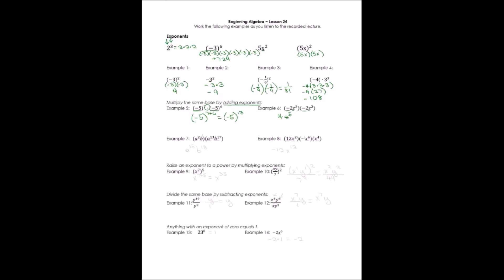In example 7, there are no coefficients to multiply, so we focus on the variables. For the a terms: a squared times a to the 13th — add the exponents to get a to the 15th. For the b terms: b with no exponent has an understood exponent of 1, so 1 plus 17 gives b to the 18th. In example 8, we do have coefficients. We multiply 12 times negative 1 times positive 1 to get negative 12. For the x terms: x squared times x to the 6th times x to the 4th — adding exponents gives 2 plus 6 plus 4 equals x to the 12th.